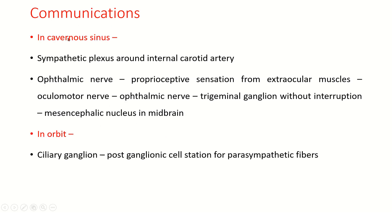Communications in the cavernous sinus: the oculomotor nerve communicates with the sympathetic plexus around the internal carotid artery and also with the ophthalmic nerve. Importantly, proprioceptive sensations from the extraocular muscles travel through the oculomotor nerve and, within the cavernous sinus, these fibers are transferred to the ophthalmic nerve. They then pass through the trigeminal ganglion without interruption to reach the mesencephalic nucleus in the midbrain.